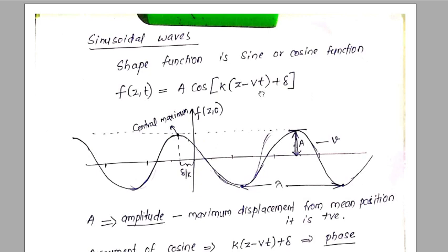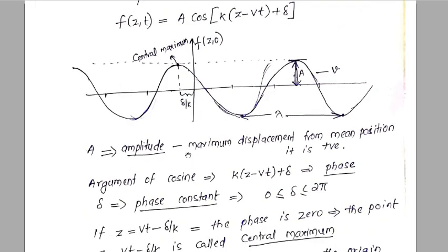Most of these things are familiar to you. The constant A represents the amplitude of the wave — that is, the maximum displacement from the mean position. The argument of the cosine function, the complete quantity kz minus vt plus delta in the bracket, is called the phase of the wave.